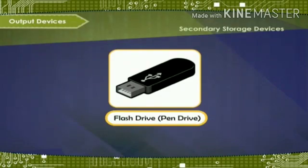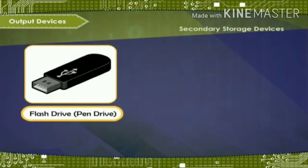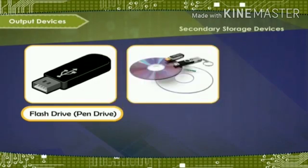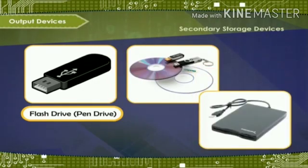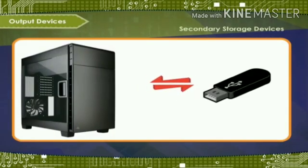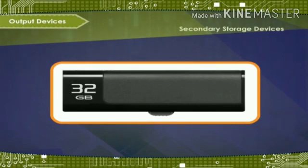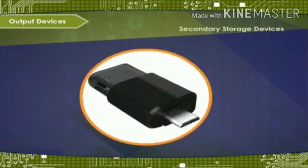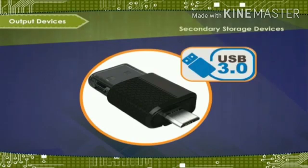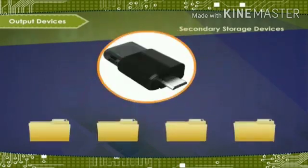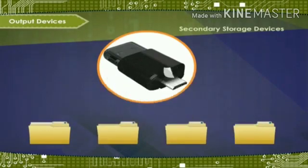Flash drive or pen drive is like a small pen that can be carried in the pocket. Its capacity to store data is much more than a CD or DVD but less than a hard disk. The data is transferred and stored through the USB port built in on the CPU. Modern flash drives can store up to 32 GB of data. The newer technology USB 3, also called USB OTG, enables data transfer at a much faster speed ranging up to 640 Mbps.